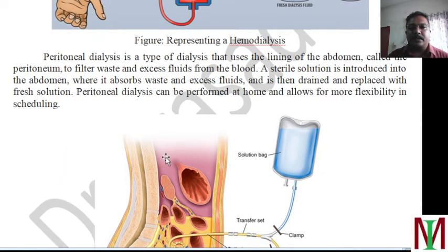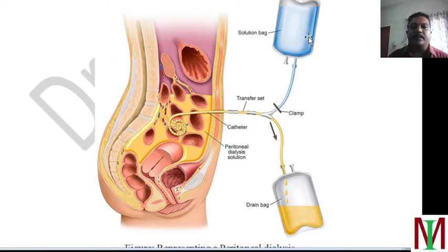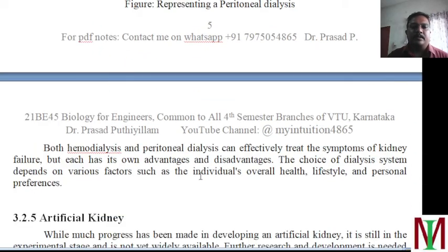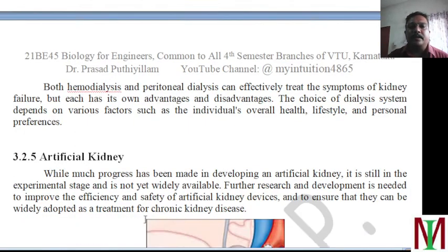Then peritoneal dialysis — a dialysis in which a tube is connected to the abdomen, called the peritoneum. The peritoneum filters waste and excess fluid from the blood, and a sterile solution is introduced into the abdomen where it absorbs waste and excess fluid, and then it is drained and replaced with a fresh sterile solution. Both hemodialysis and peritoneal dialysis can effectively treat the symptoms of kidney failure, but each has its own advantages and disadvantages based on the patient's health, lifestyle, and preferences.